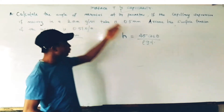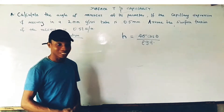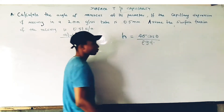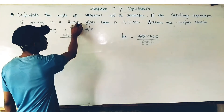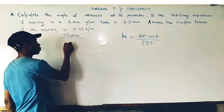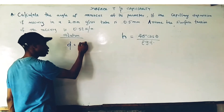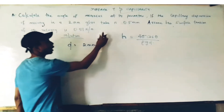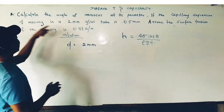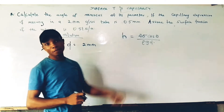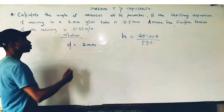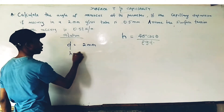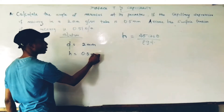We need to find the angle of the meniscus, which is the angle of contact theta. Our given parameters are: diameter d = 2mm, and the capillary depression H = 0.5mm (it's a depression because the liquid is mercury).